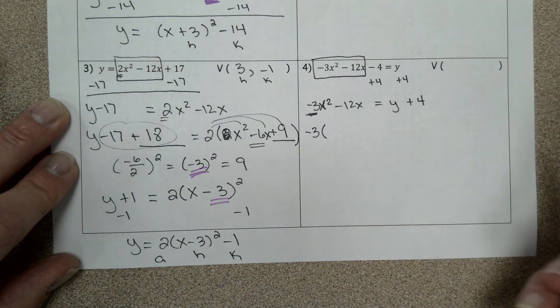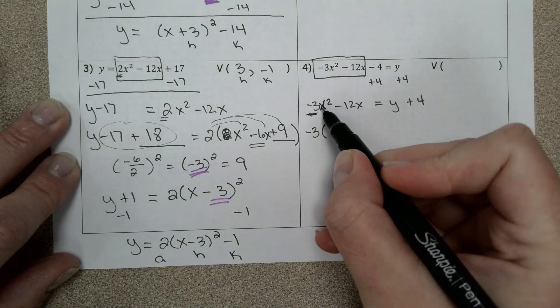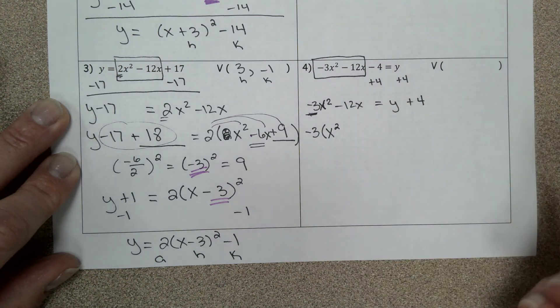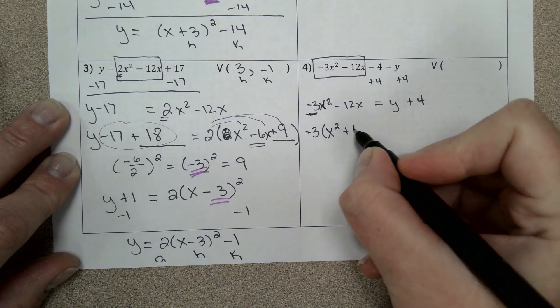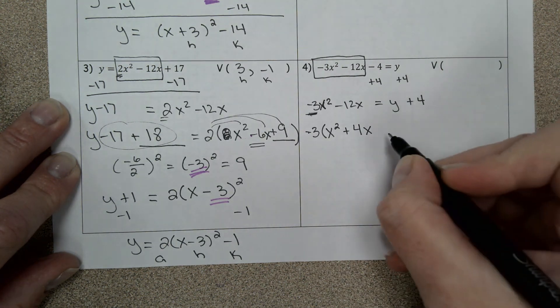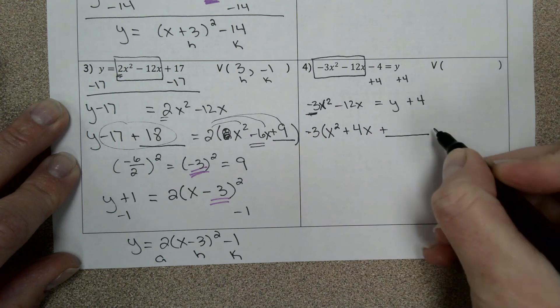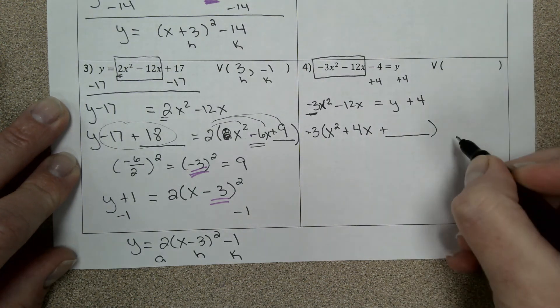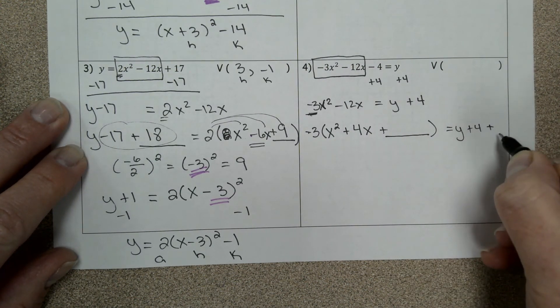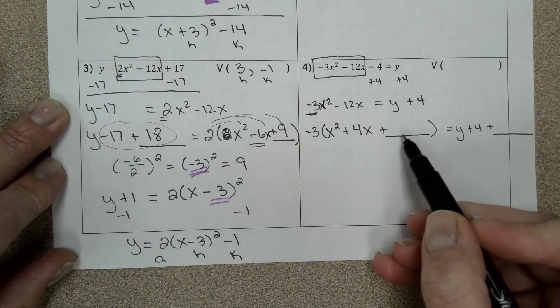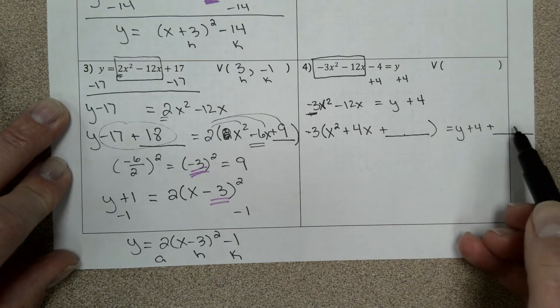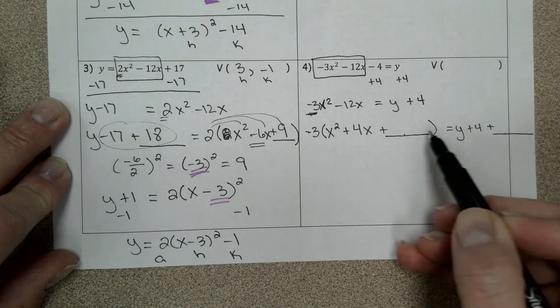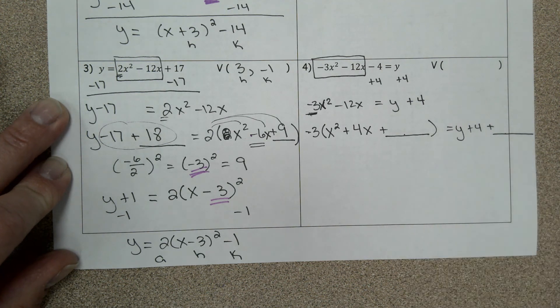So when you factor it, it's like you're dividing it. When I divide a negative 3 out I get an x². Negative 12x divided by negative 3 is a plus 4x, and then you're going to leave yourself a blank. So that when you complete the square, whatever number you add here, you're going to have to multiply it by negative 3. But you want room to add or subtract the same number from both sides.